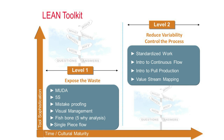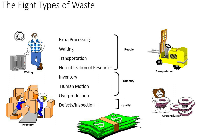The level one tools expose the waste: Muda, 5S, mistake proofing, visual management, fishbone, and single piece flow. The level two tools reduce variability and increase process control: standard work, introduction to continuous flow, pull production, distribution, and value stream mapping. In this basic Lean training we will cover level one tools only. The first tool is Muda — the eight wastes, whose acronym is DOWNTIME: extra processing, waiting, transportation, non-utilization of resources, inventory, human motion, overproduction, and defects. I have a separate video on this — link in the description.